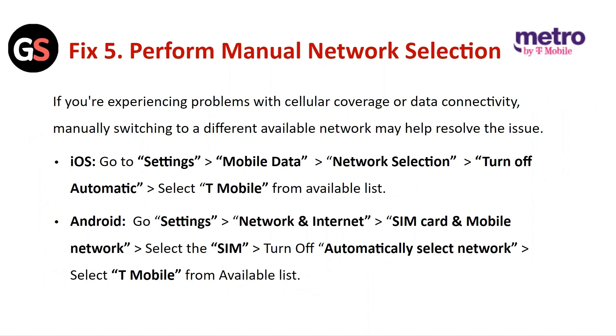For Android, go to Settings, then Network and Internet, then SIM Card and Mobile Network. Select the SIM, turn off automatically selected network, and select T-Mobile from the available list.